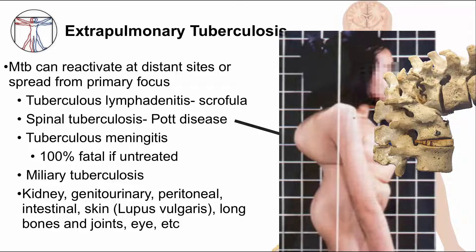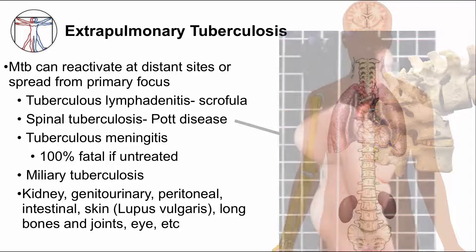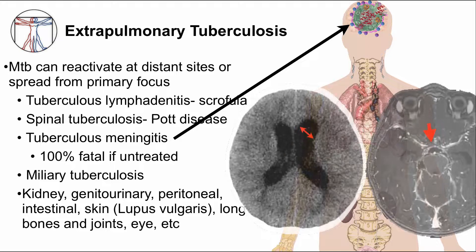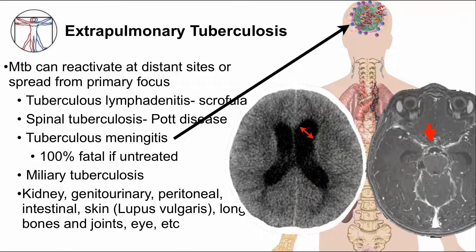TB meningitis is a major complication in infants and has nearly 100 percent mortality if not treated. Inflammation of the meninges at the base of the brain — the red arrow points to the area — causes obstruction of CSF flow and results in hydrocephalus, enlarging of the ventricles, as you can see in the CT scan image.